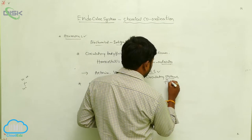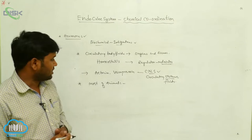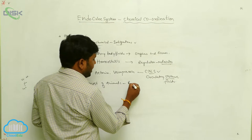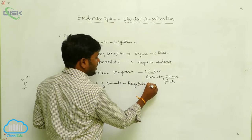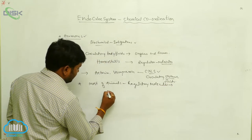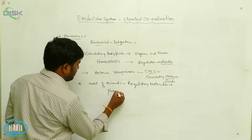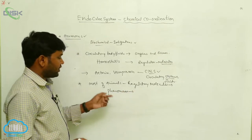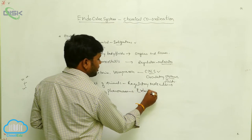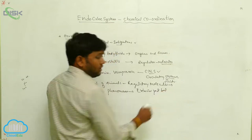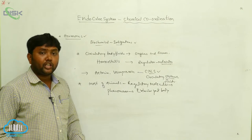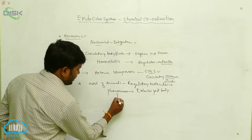Most animals also release regulatory molecules called pheromones. Pheromones are released into the exterior part of the body and help participate in chemo communication.